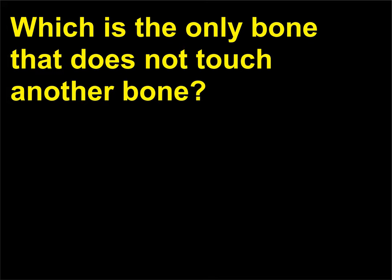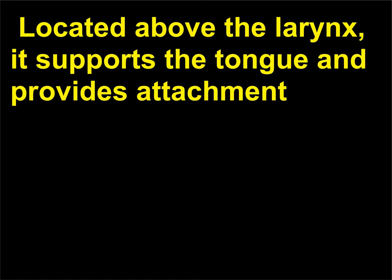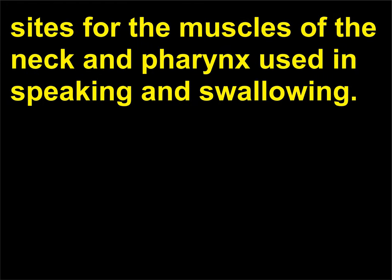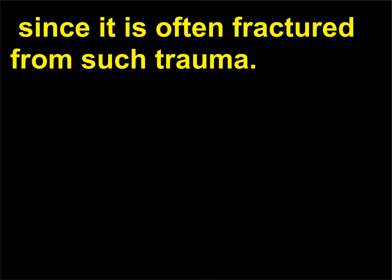The hyoid bone is the only bone that does not touch another bone. Located above the larynx, it supports the tongue and provides attachment sites for the muscles of the neck and pharynx used in speaking and swallowing. The hyoid is carefully examined when there is a suspicion of strangulation, since it is often fractured from such trauma.